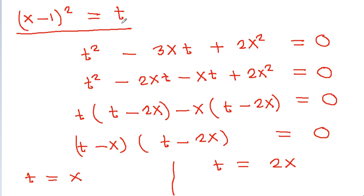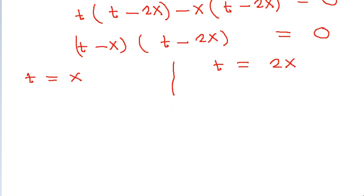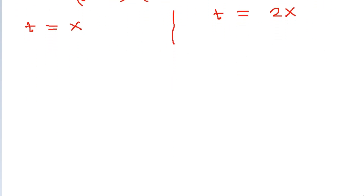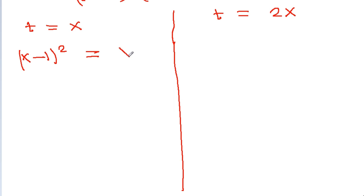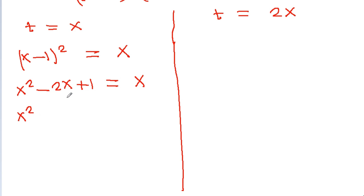When t = x: (x - 1)² = x, so x² - 2x + 1 = x, giving x² - 3x + 1 = 0.